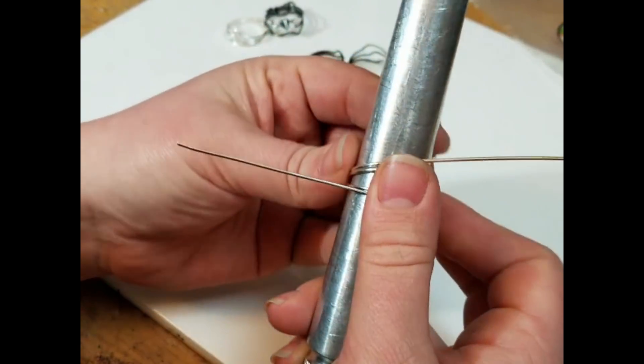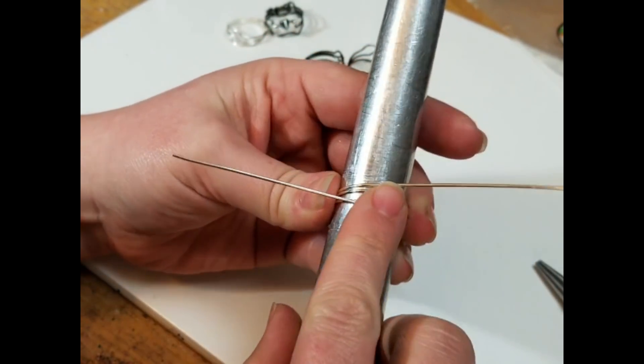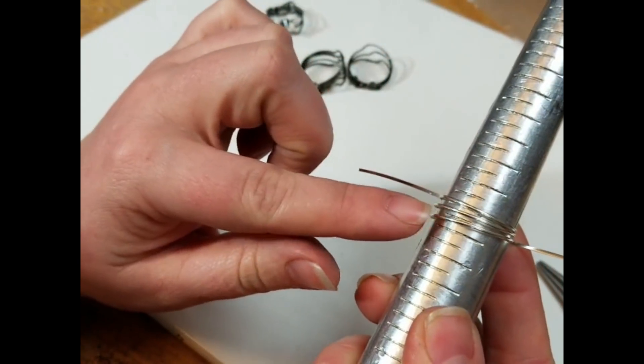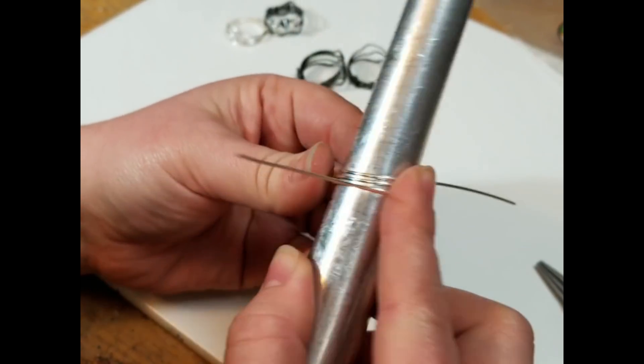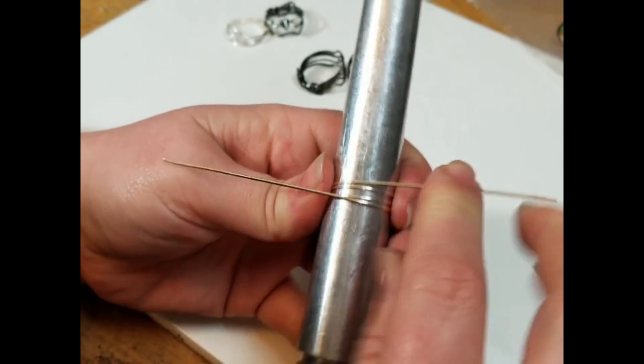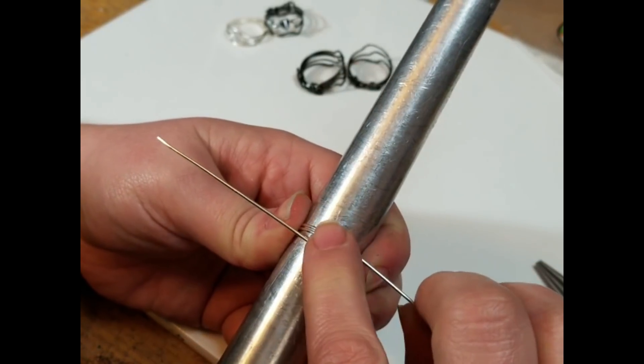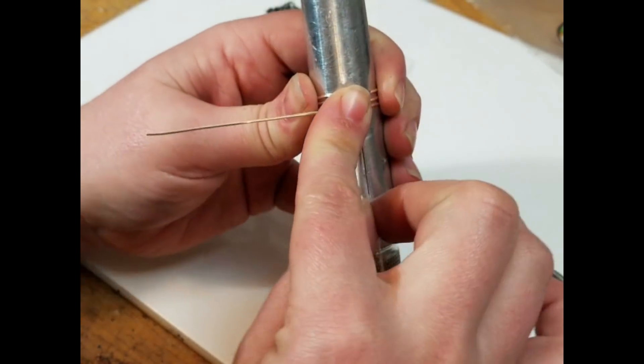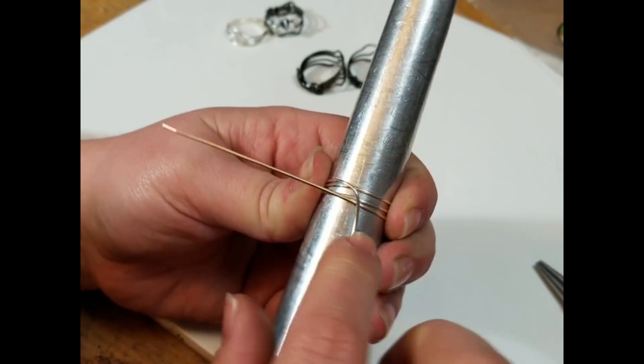Making sure that it's not crossing itself at any point. I'm going to keep these wraps very parallel to each other, no crossing. Now here at the end, we've come, got a couple of inches left, tail wire, and on the front side we have three nice wraps.